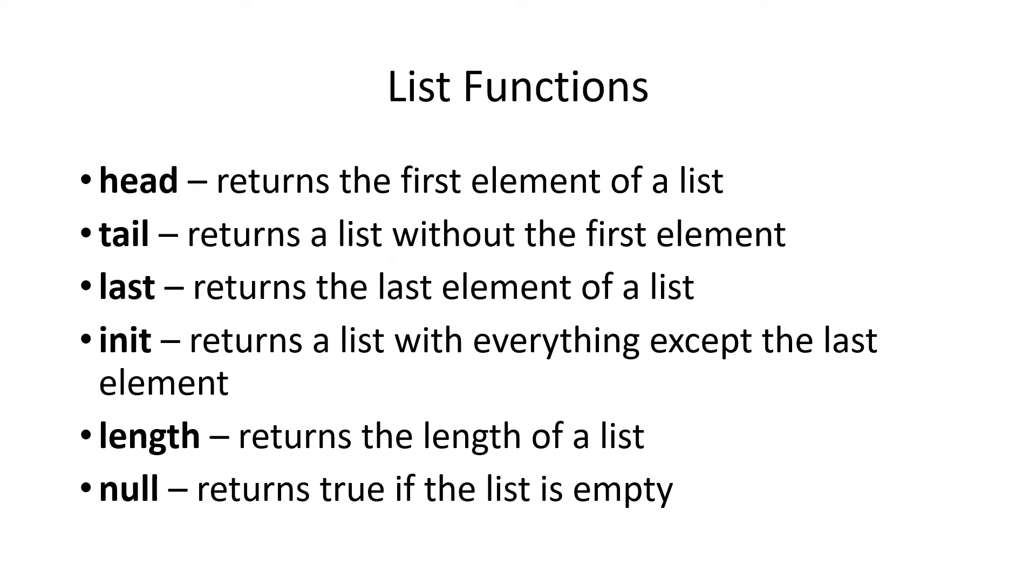There are all sorts of list functions that are explained in the Learn You a Haskell tutorial. Head returns the first element of a list. If it's an empty list, it returns an empty list. Tail returns everything but the first element in the list. It returns a list. Head returns an element. Tail returns a list.